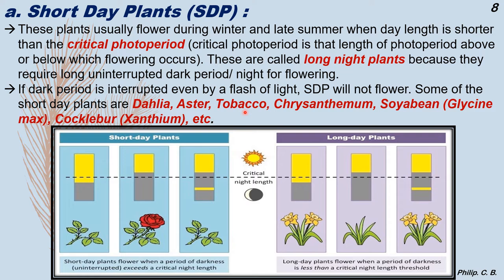If the dark period is interrupted by a flash of light, short day plants will not flower. Images show that maximum dark period helps in flowering, while minimum dark period is not helpful. If the long night period is available but interrupted, flowering may not take place. Conversely, in long day plants, a short dark period and long light duration enables flowering, whereas a long dark period with less light prevents it. If the long dark period is interrupted, flowering may occur in long day plants but not short day plants.